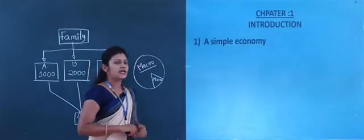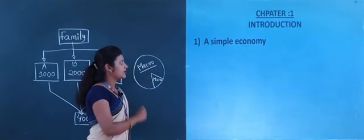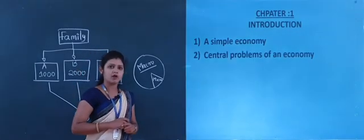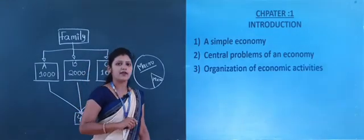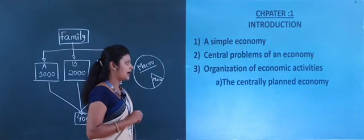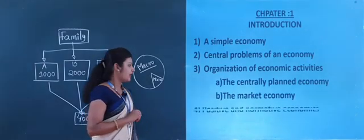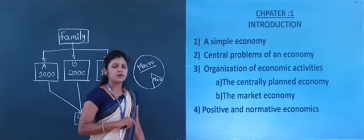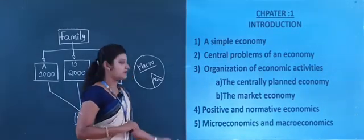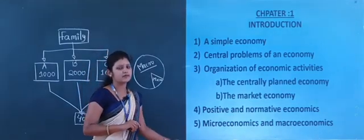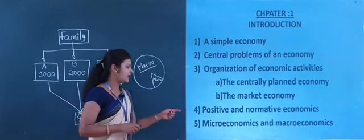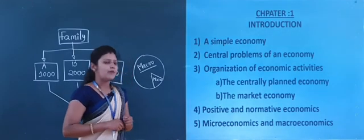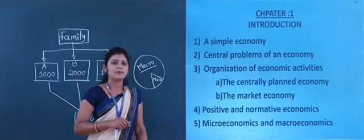Under this chapter, we are going to study some points. The first point is a simple economy. The second one is central problems of an economy. The third one is organization of economic activities, including the centrally planned economy and the market economy. The fourth point is positive and normative economics, where we study the difference between them. The fifth point is microeconomics and macroeconomics, where we will study the difference between the two. Now I am going to take the first point, that is a simple economy.